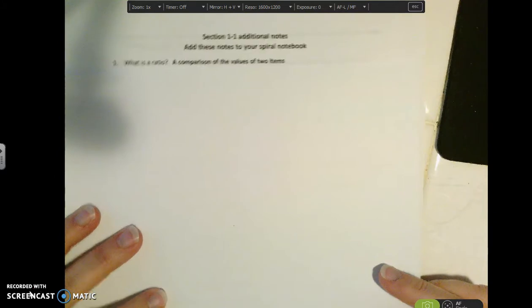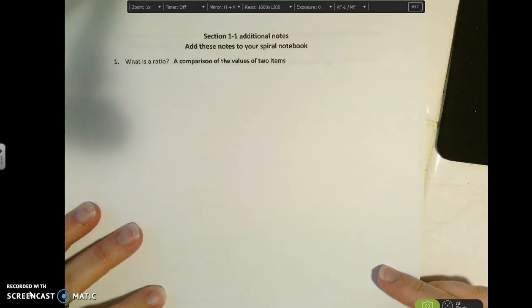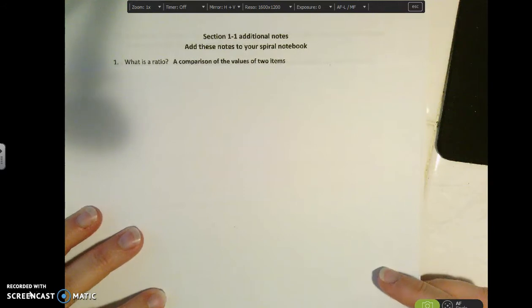So the first question I asked you was what is a ratio? A ratio is just a comparison of two values of the values of two terms. For example, if I'm going to compare the number of boys to the number of girls or something like that, then we're talking about a ratio as a comparison.